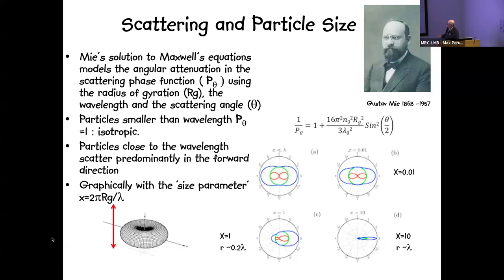Particles closer to the wavelength of light scatter predominantly in the forward direction. This can be visualized using the size parameter: 2π·Rg divided by wavelength. When the size parameter is very small, you get isotropic scattering in all directions. When the particle radius is approximately equal to the wavelength of light, essentially all of the scattering is in the forward direction.